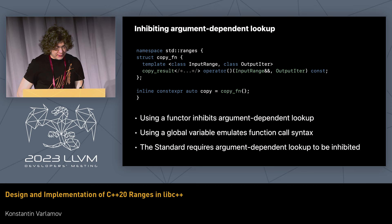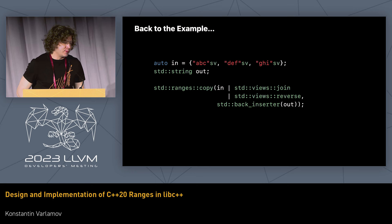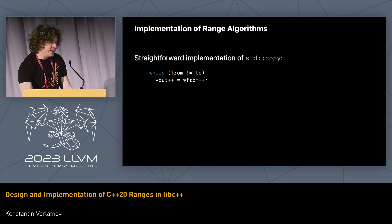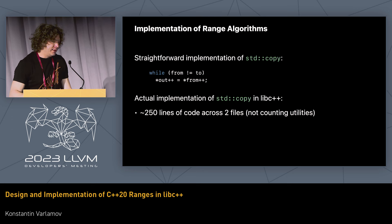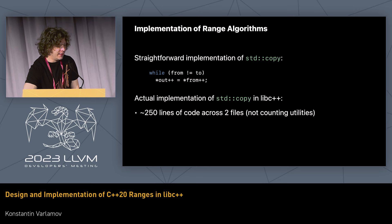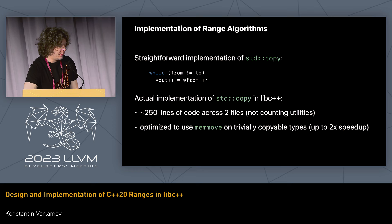Now let's look at ranges::copy from a different perspective. The implementation seems like it should be super simple — how hard can it be to copy from one iterator to another? But the bitter reality is that our implementation of std::copy is something like 250 lines spread across two files, plus utilities. The main reason is optimizations: we identify when it's safe to replace the loop with a call to memmove, which requires contiguous storage and a trivial data type — and that can achieve a 2x speedup.